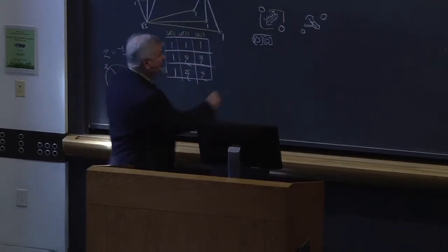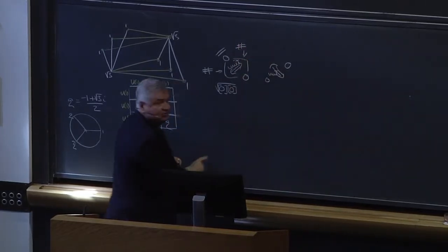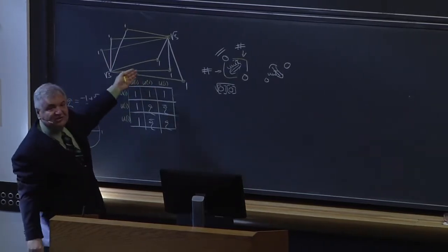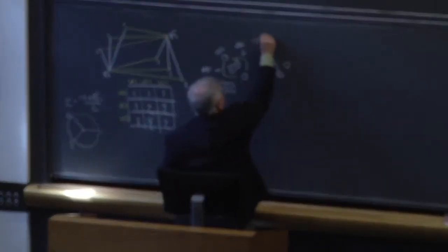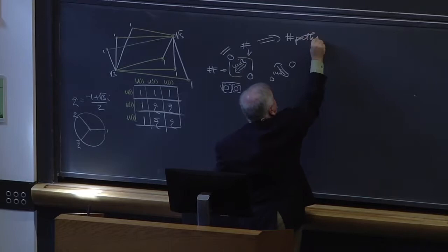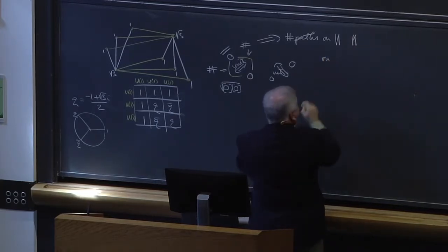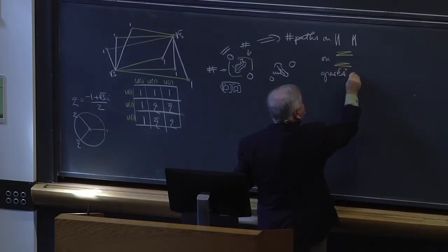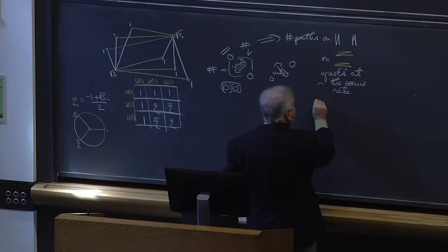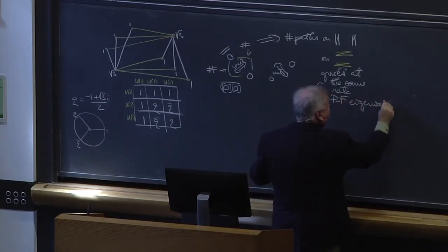As James was mentioning, the number of such maps equals the number of paths in one direction. This shows asymptotically that the number of paths on these graphs grows at approximately the same rate, which means the Perron-Frobenius eigenvalues are the same.